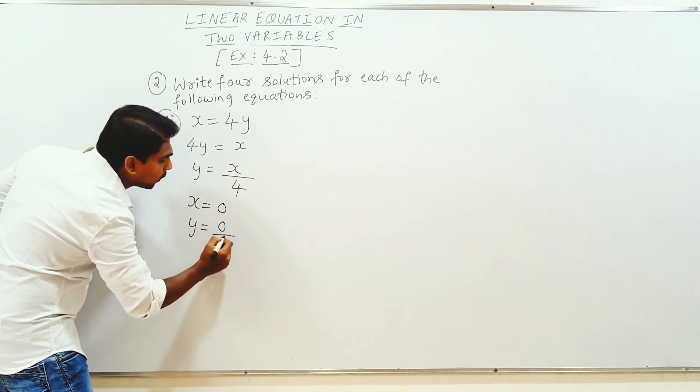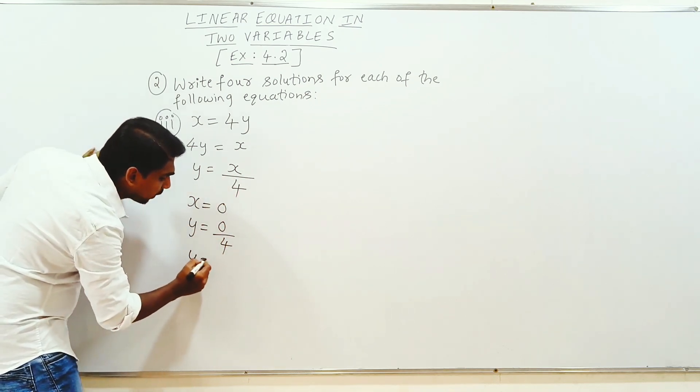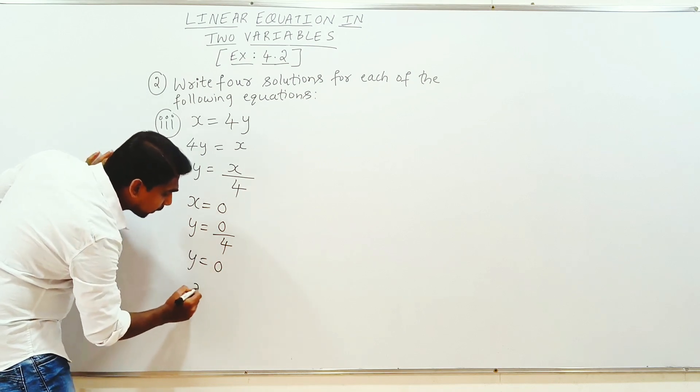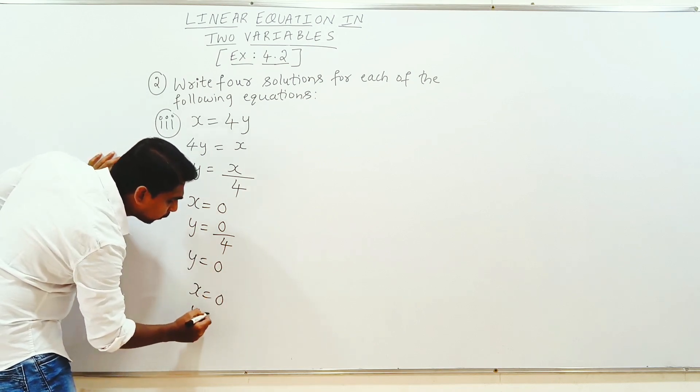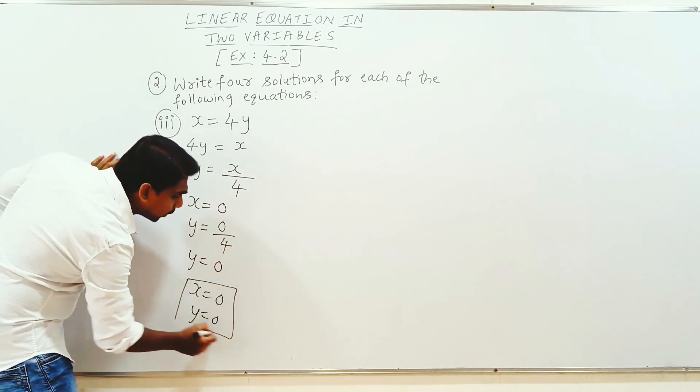y is equal to 0 by 4. 0 by anything is 0, so x equals 0, y equals 0. This is one solution.